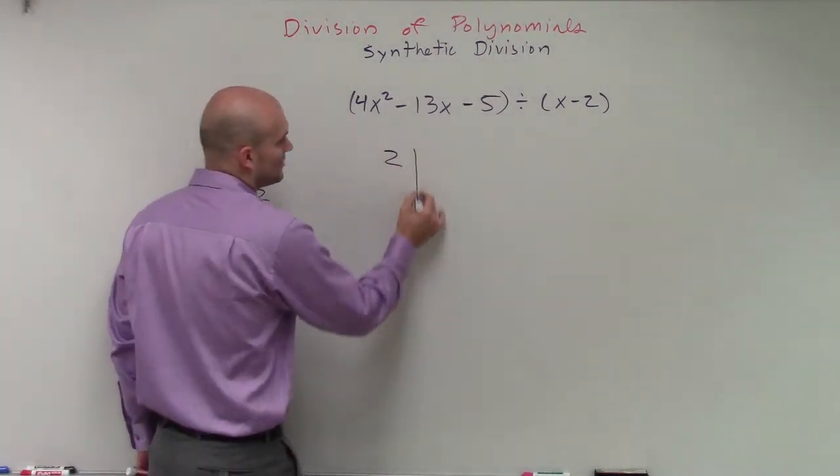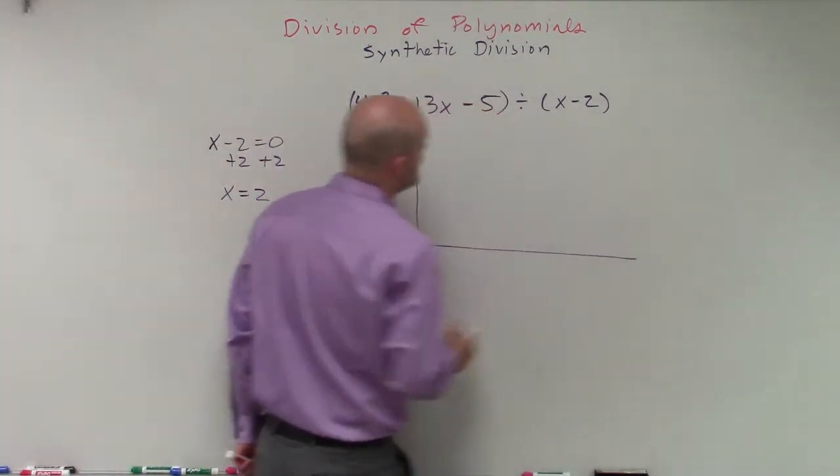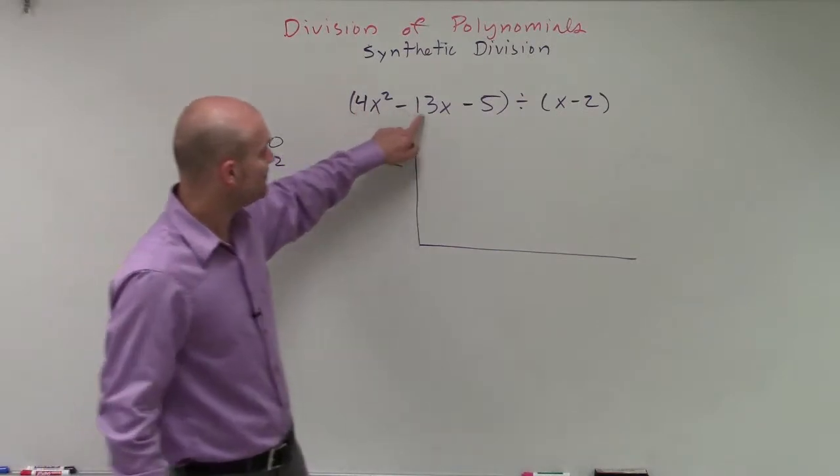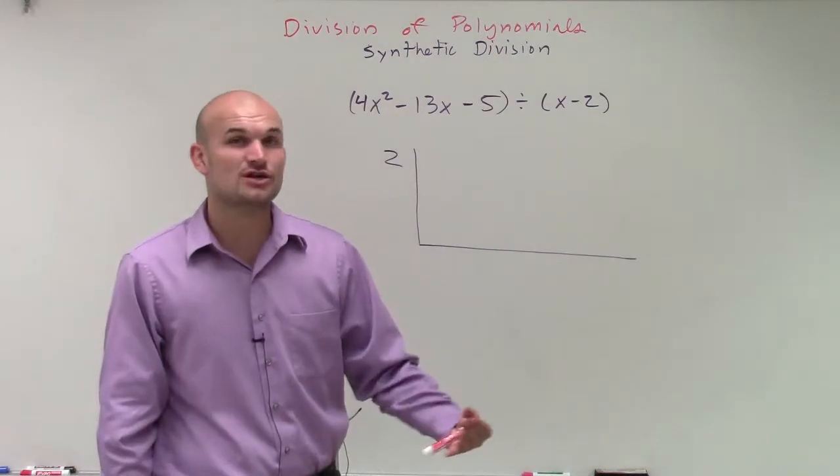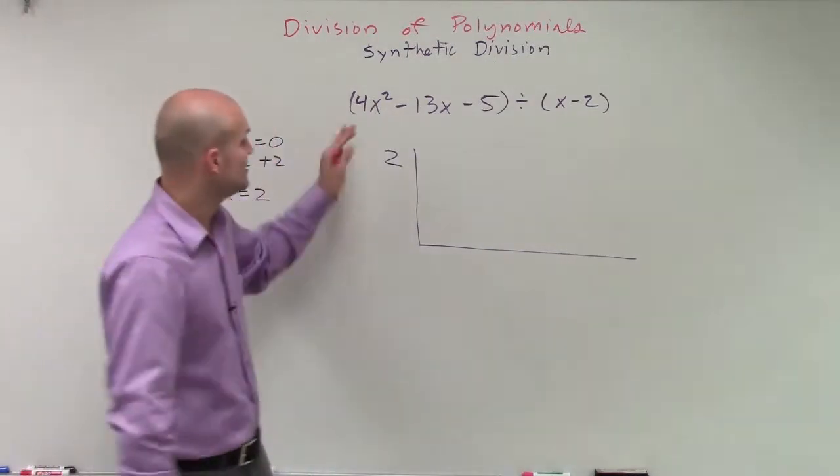Then we're going to place this on the outside. And we're going to create a nice little box here. The next thing we're going to do is we're going to take the coefficient of each one of our terms. If we're missing a term, we need to make sure we include 0.